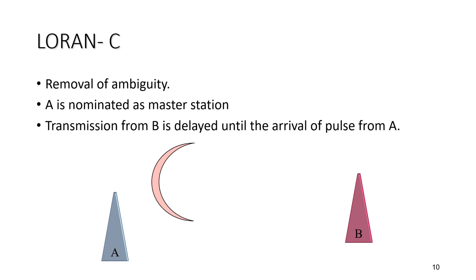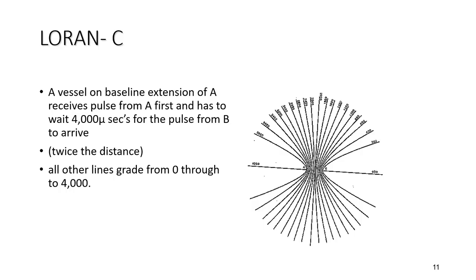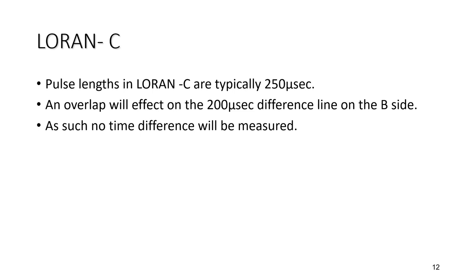If both stations were transmitting simultaneously, in some areas of coverage the master and slave signals would actually overlap, making it impossible to even measure the time difference on board. To overcome these problems, the LORAN-C transmission format is arranged so that within the chain the master signal is always received first, followed by the slave signals. This is achieved by the master transmitting its format first; each slave, on receiving the master signal, waits for its predetermined coding delay before transmitting.